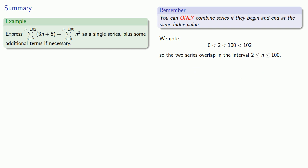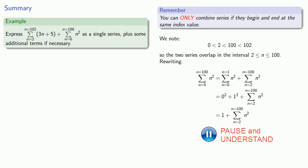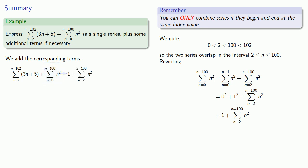So we'll want to use our ability to break a series apart into a series that runs from 2 to 100 plus whatever the leftover bits are. So the first series that runs from 0 to 100 can be broken apart into a portion that runs from 0 to 1 and a portion that runs from 2 to 100. But this first bit is just going to consist of the two terms 0 squared plus 1 squared, that's 1, plus the remaining part of the series. And so we can replace this series from 0 to 100 of n squared with 1 plus the sum from 2 to 100 of n squared.